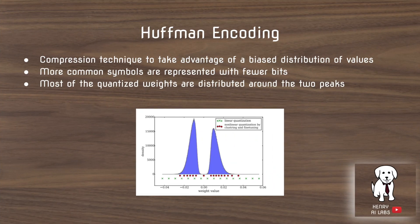Once they have quantized the weights they turn to Huffman encoding. Huffman encoding is a technique used in data compression to basically take advantage of the bias distribution values. For example in this bimodal distribution most of the values lie at the peak.